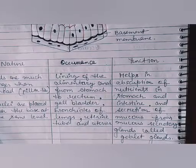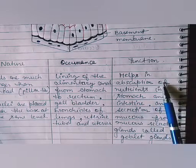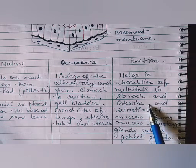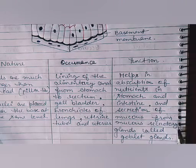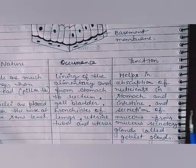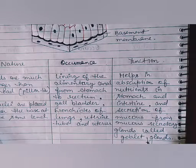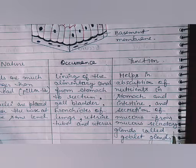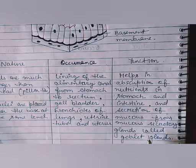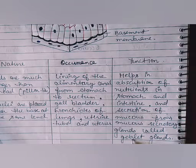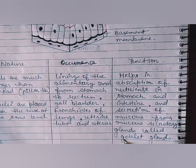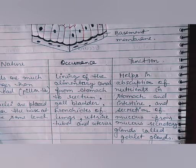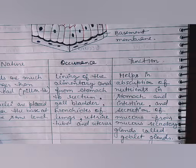The function of columnar epithelium is to help in the absorption of nutrients in the stomach and intestine, and in the secretion of mucus from mucus-secretory glands called goblet cells. The wall of the stomach secretes mucus, and the columnar epithelium cells — especially goblet cells — secrete that mucus.